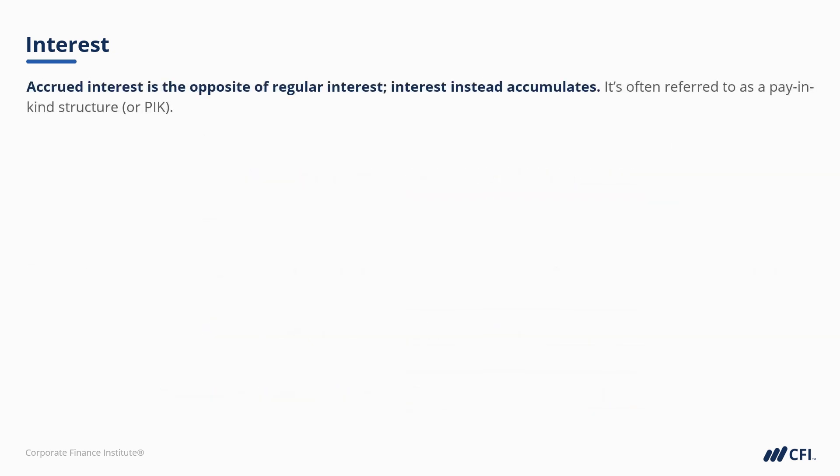Accrued interest is the opposite of regular, meaning rather than making a regular cash payment at the end of each year, the interest owing would instead accrue, or accumulate, and would be due at the end of the term. Accrued interest is often referred to as a pay-in-kind structure, or PIK. But with an accrued interest structure, simple interest doesn't make sense — the lender wouldn't see a single dollar of interest or principal until the end of year 3 in our example.